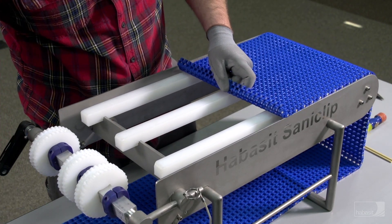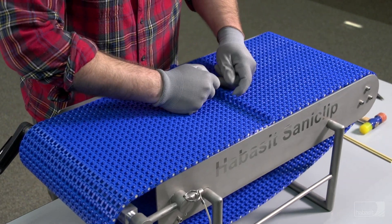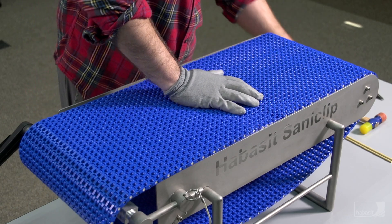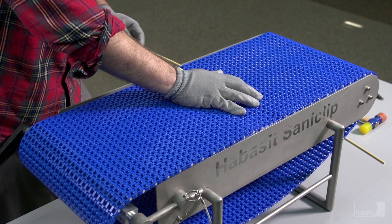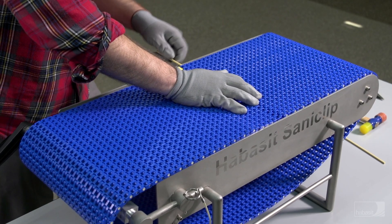Thread the belt back onto the conveyor and join the belt ends together. Insert a rod into the modules at the belt ends and secure it with a soft face mallet.